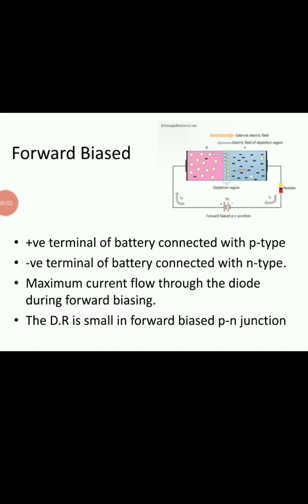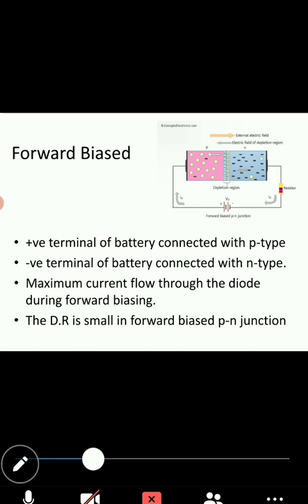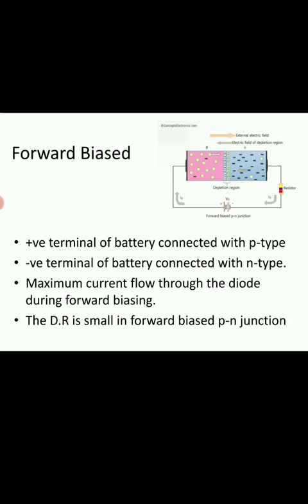Hello everyone. Here we are supposed to see forward biasing of a diode. Now you can see in the diagram, when we are connecting an external power supply to the diode, at that time, we are saying that process has a bias.